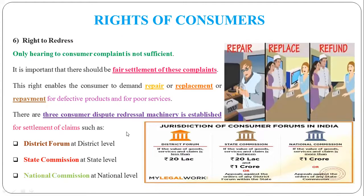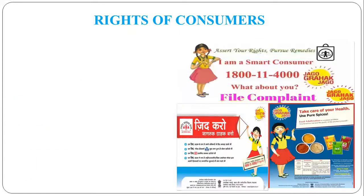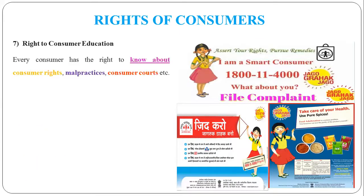So there are three redressal forums at each level where customers can solve different problems. It depends on how much the amount or the value of your complaint is. In this way, the customer can get redress — the product can be repaired, replaced, or repaid. Right to consumer education. Consumers need to know about their rights, consumer malpractices — such as adulteration, exorbitant prices, or weight and measure problems. These are all malpractices, which can also be called unfair business practices.